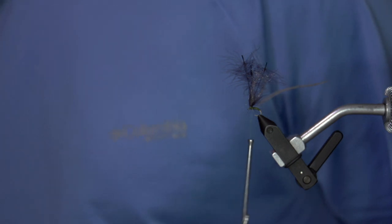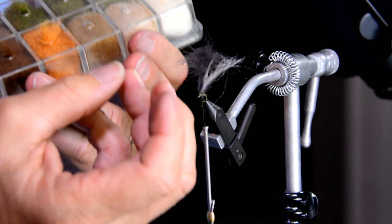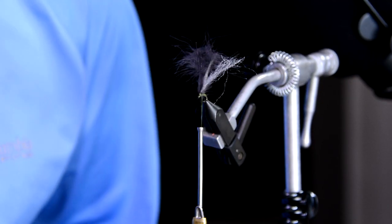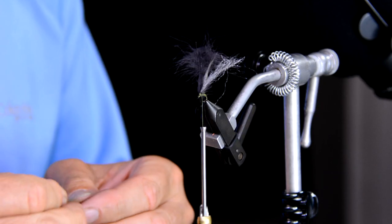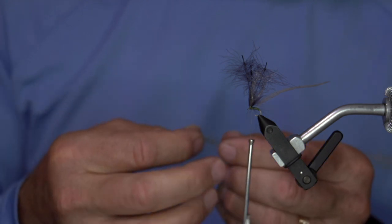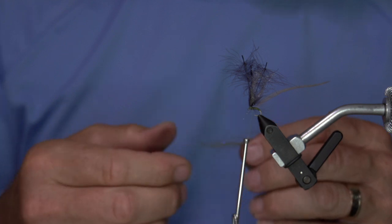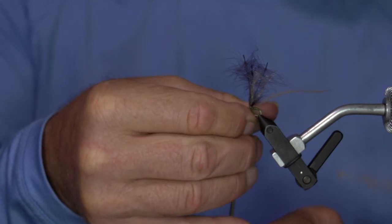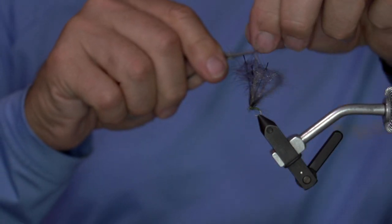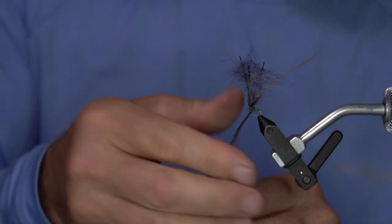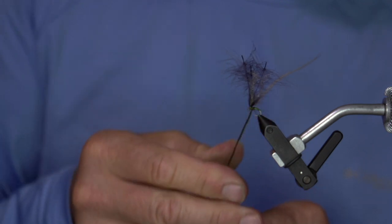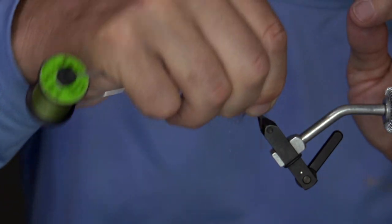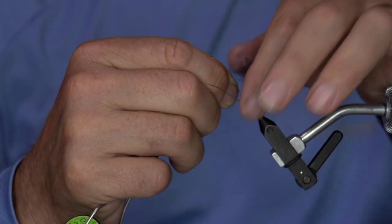Next up, I'm going to dub the thorax on this thing. Remember, it's a nymph underneath, it's a dry on top. And so I want some legs sticking off this. I don't want this to be a super tight dubbing noodle. And so I'm going to mix in a little brown, a little olive, to kind of get that really cool earthy blend.